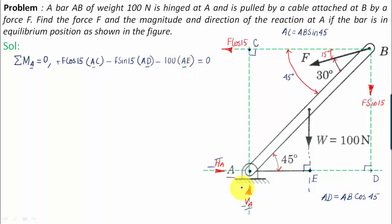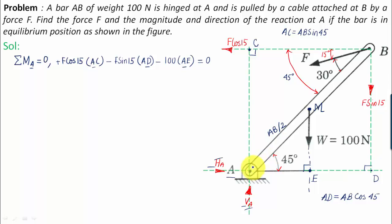Now AE: this is part of a triangle where the midpoint of AB is labeled M. Since the weight acts at the center of the bar, AM equals AB over 2. Therefore AE works out as AB/2 cos 45. All three perpendicular distances are now expressed in terms of AB.